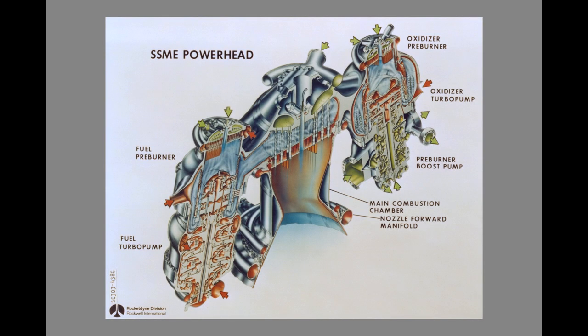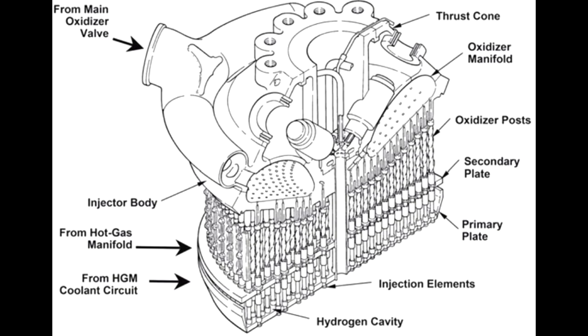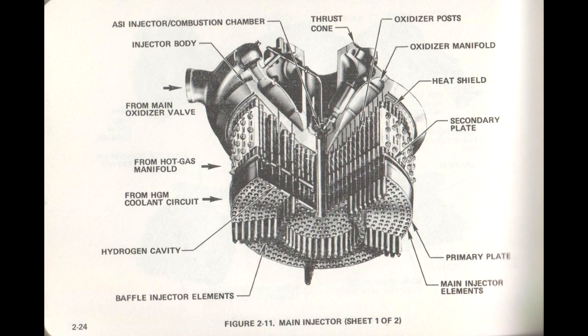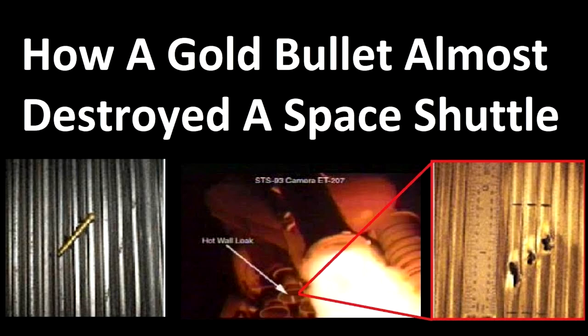The Space Shuttle main engine, they use a coaxial swirl system with the oxygen flowing down the middle. But the central pipes used for the oxygen are also heated by the hot hydrogen-rich exhaust from the preburners, which means that your hot oxygen is coming into the chamber warmed up and more readily turning itself into a gas. And if you want to know a bit more about this injector, you should watch my video on STS-93 explaining how a gold bullet almost destroyed a space shuttle.